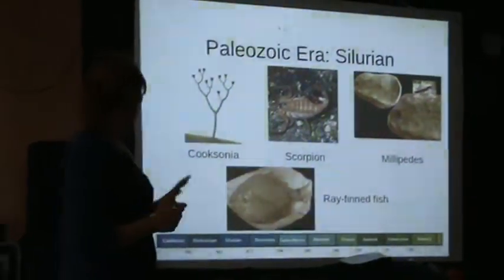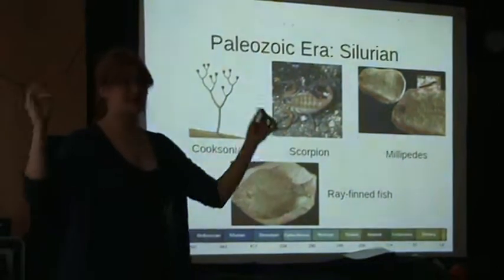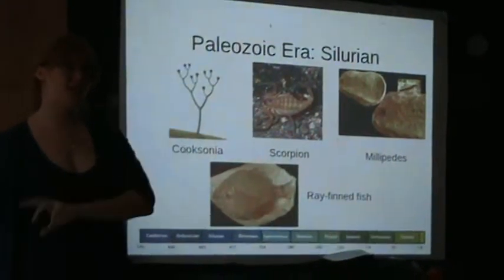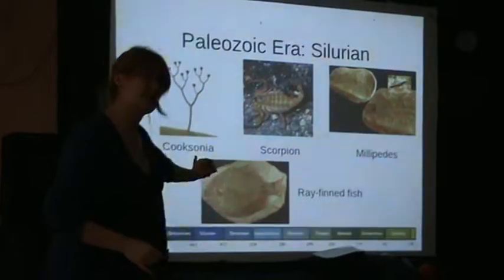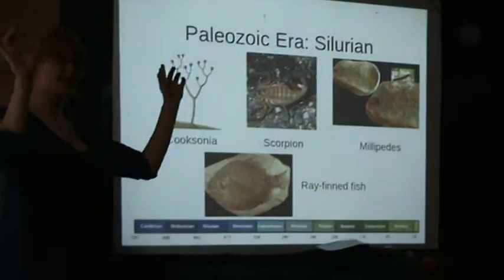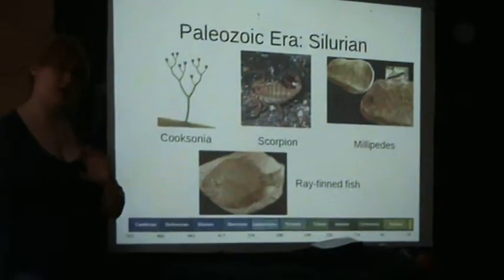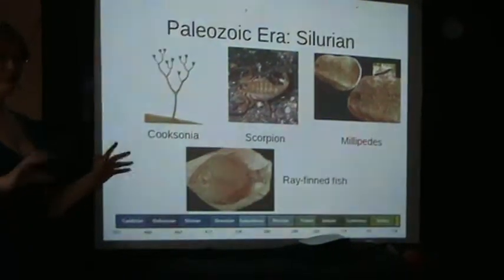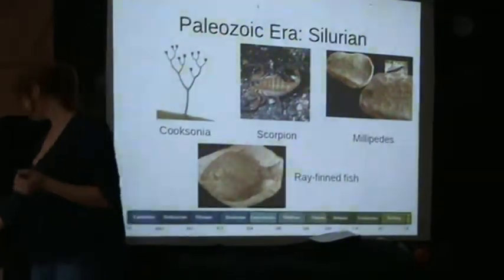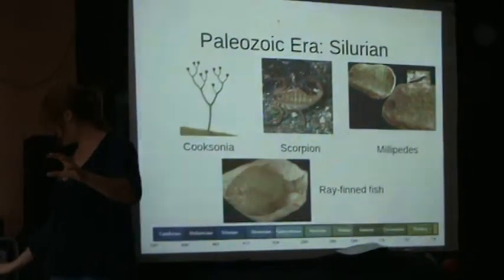During the Silurian period, we saw again a huge burst of radiation of species within the oceans, and we saw the very first jawless fish occur. We also saw the first move of life from the oceans onto the land, with the very first land plants being the Cooksonia. The Cooksonia was a very simple plant — it had no root structures and it fertilised using spores at the very tips. We also saw the very first fauna moving onto land, within the arthropod lineage — scorpions and millipedes emerged.